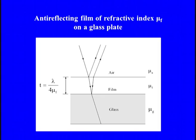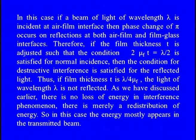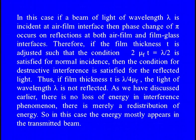Suppose the refractive index of the film material μ_f is less than the refractive index of glass μ_g and greater than the refractive index of air μ_a. If a beam of light of wavelength λ is incident at the air-film interface, a phase change of π occurs on reflections at both the air-film and film-glass interfaces. Therefore, if the film thickness t is adjusted such that the condition 2μ_f·t = λ/2 is satisfied for normal incidence, the condition for destructive interference is satisfied for the reflected light. Thus, if film thickness t = λ/(4μ_f), the light of wavelength λ is not reflected.